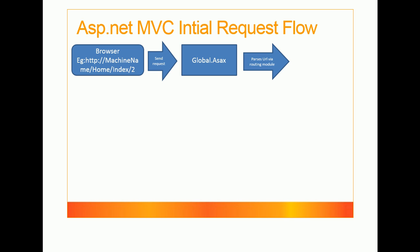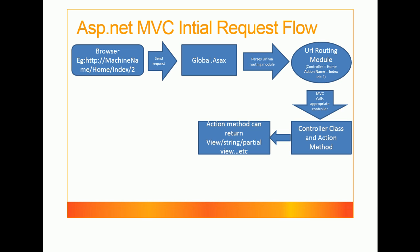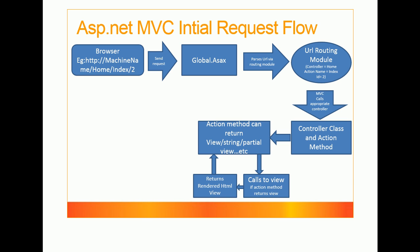The global.asax page passes the URL through a URL routing module, which finds the particular controller and action method name. MVC calls that controller class and action method. The action method can return a view, string, partial view, etc. If it returns a view, a rendered HTML view is produced and the response goes back to the browser. This is the ASP.NET MVC initial request lifecycle.